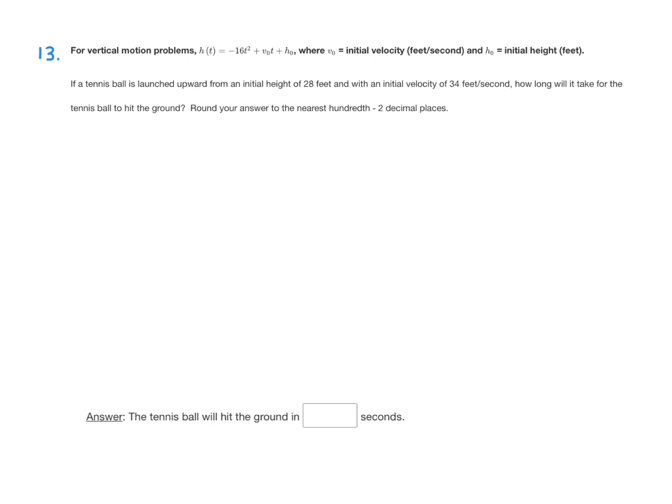On question 13, it says for vertical motion problems, h(t) equals negative 16t squared plus v sub 0 t plus h sub 0, where v sub 0 is the initial velocity in feet per second, and h sub 0 is the initial height in feet.